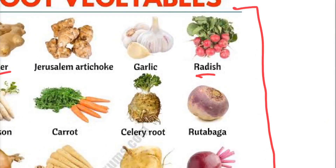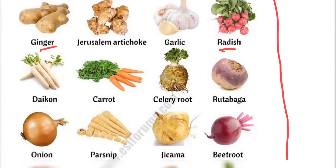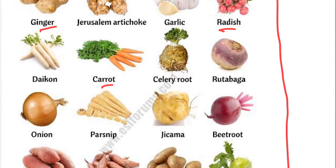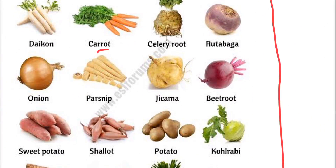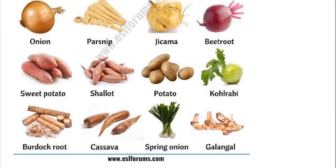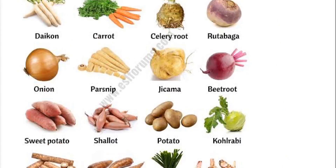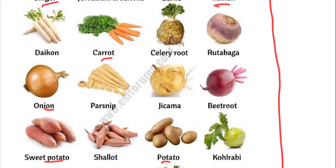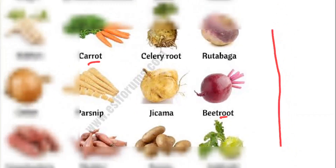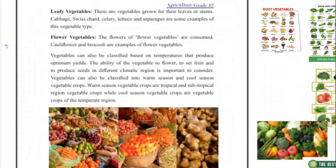Root vegetables include onion, sweet potatoes, potatoes, and beetroot. These are vegetables grown underground for their roots.